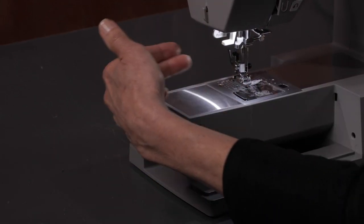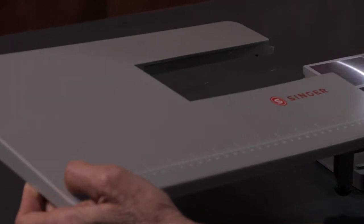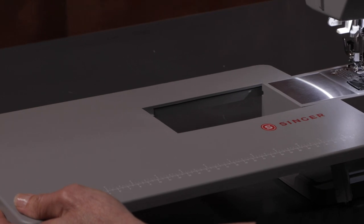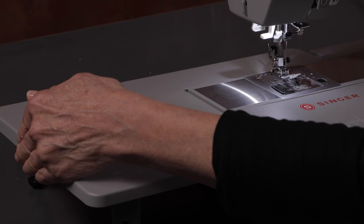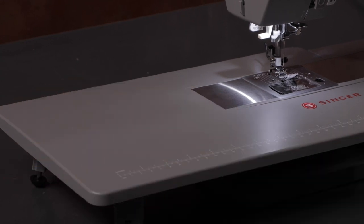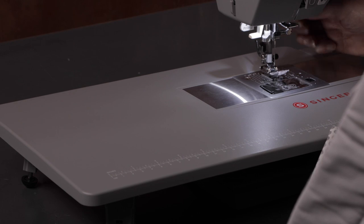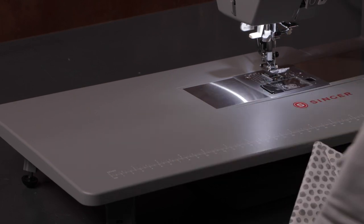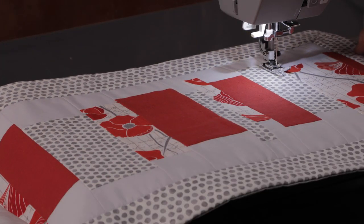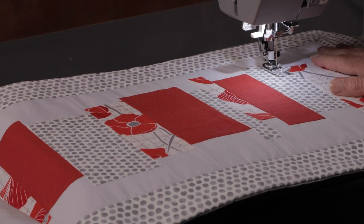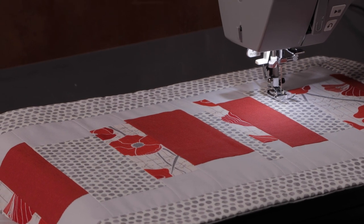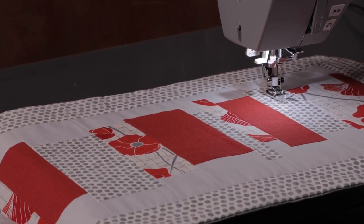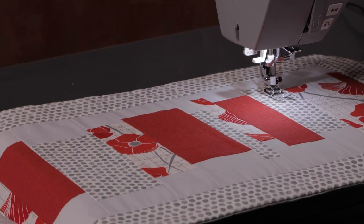For larger projects you may be interested in this larger extension table. It's available on the Singer website. It slides onto the end of the free arm like this, you can just give it a little push to pop it on. What that does is it gives you a larger surface that's nice and level for larger projects like quilts, home decor projects, larger garments and so on. For more information about optional accessories like the large extension table or other presser feet, visit the Singer website.